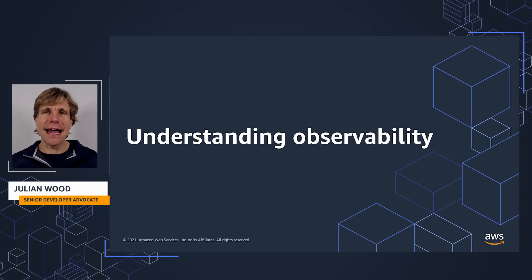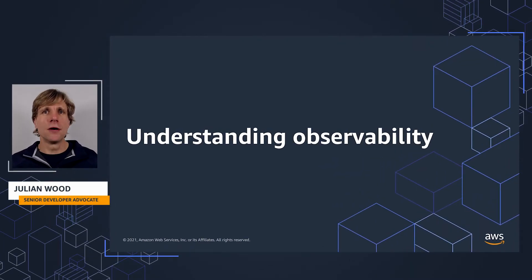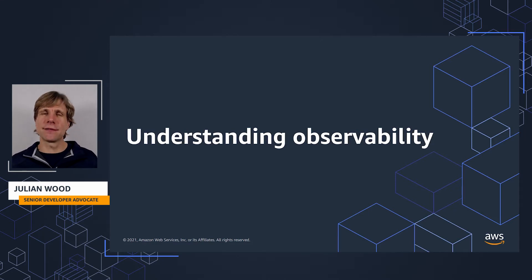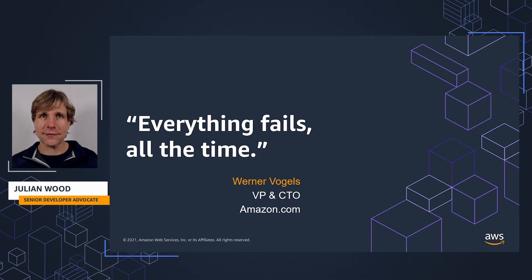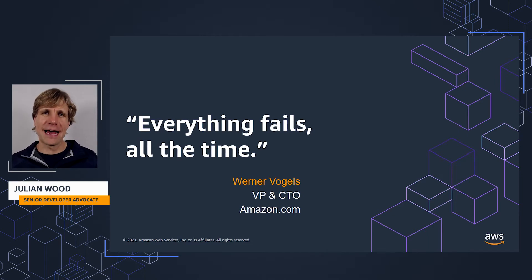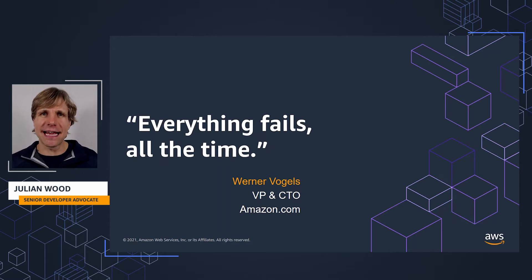In this video, I'm going to be unpacking the concept of observability, which a lot of people are talking about in the industry at the moment, and highlight a number of ways to think about it. The simple idea is to more effectively understand how our systems are behaving. We need to recognize that there's no such thing as an application that never fails. As Amazon CTO Werner Vogels often loves to say, everything fails all the time.